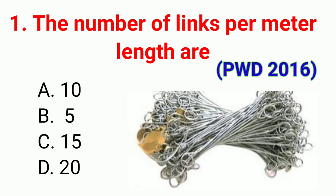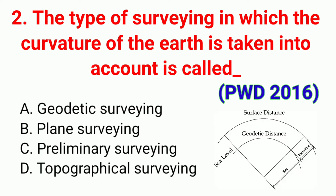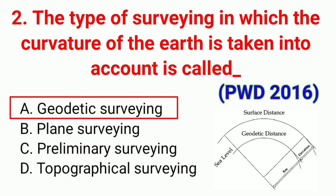Question number one: The number of links per meter length. This question was asked in PWD 2016 exam. The correct answer is option B. Question number two: The type of surveying in which the curvature of the earth is taken into account is called. This question is also from PWD 2016. The correct answer is option A, Geodetic surveying.